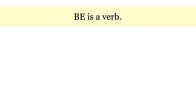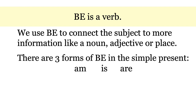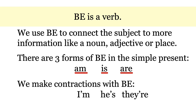In this lesson, you learned a lot about the BE verb. You learned BE is a verb. We use BE to connect the subject to more information like a noun, adjective, or place. There are three forms of BE in the simple present: AM, IS, ARE. And we make contractions with BE: I'm, he's, and they're.